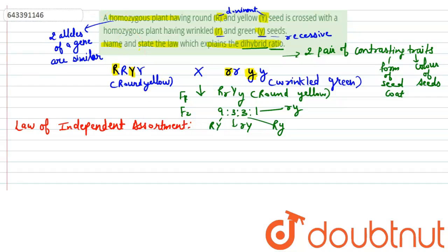What this law states, when two pairs of traits of contrasting characters are combined in a hybrid, then segregation of one pair of characters is independent.